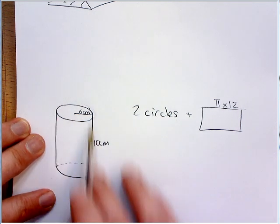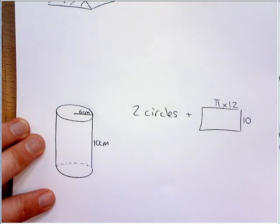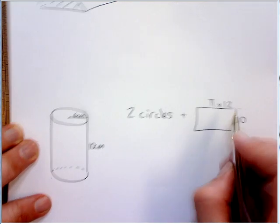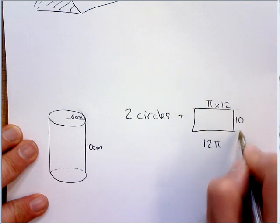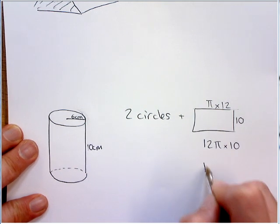And we can see that this length here is 10. So, pi times 12 is 12 pi. Times 10, that's, well, 120 pi.